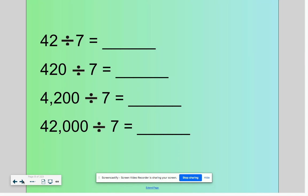Let's solve these problems. If 42 divided by 7 is 6, take a second to solve the rest. Feel free to pause this video so you can solve it at home.